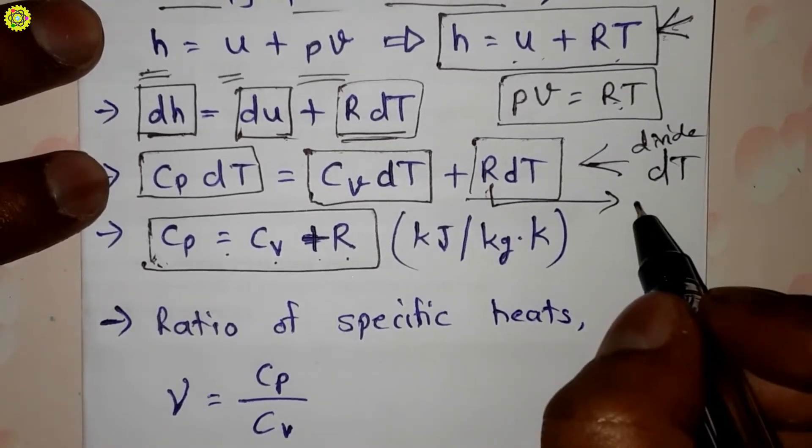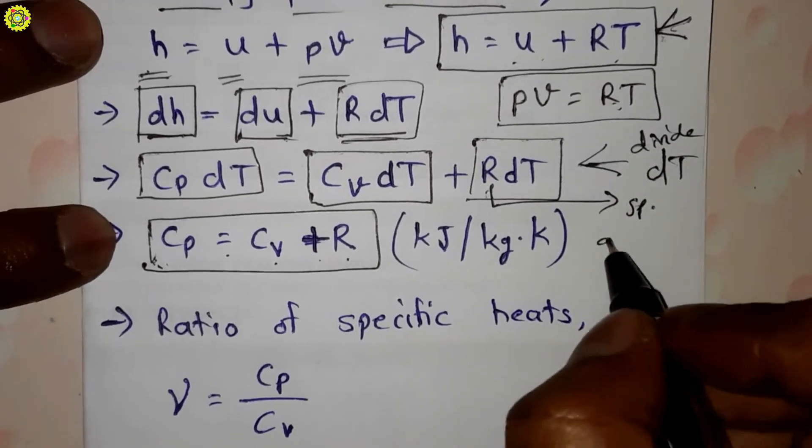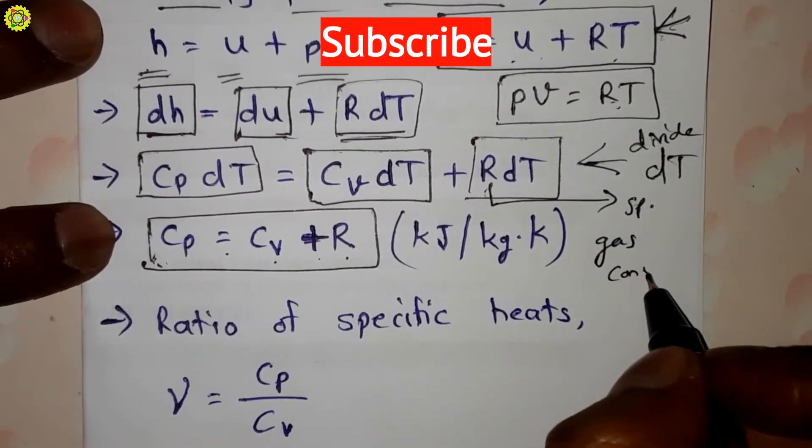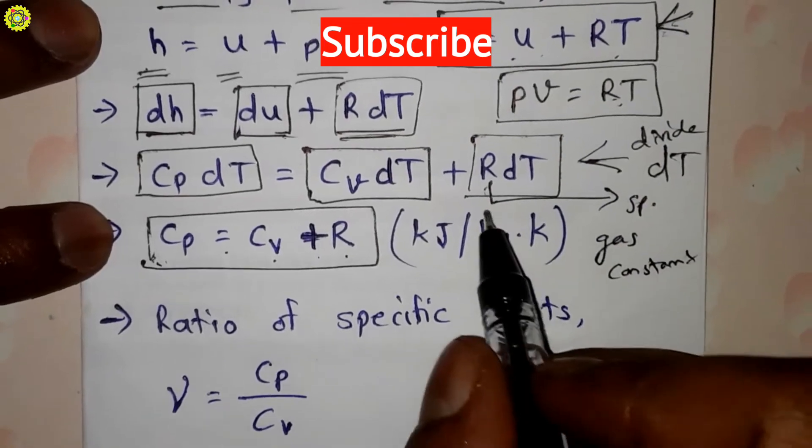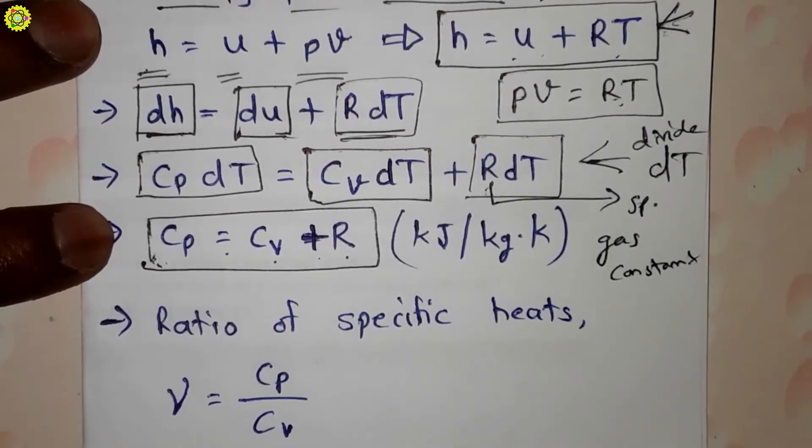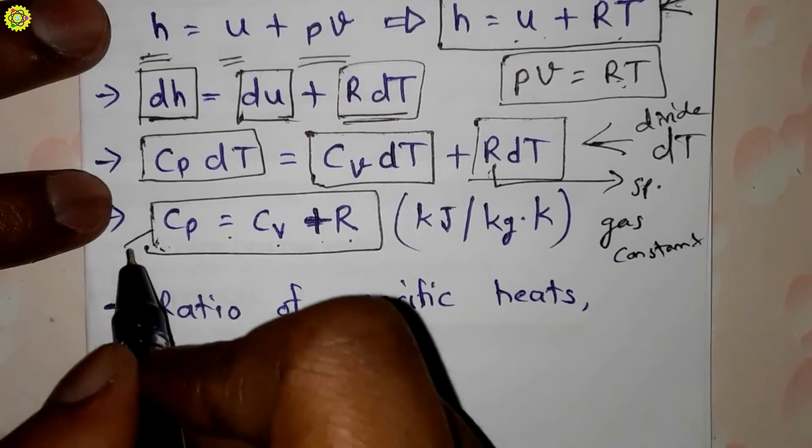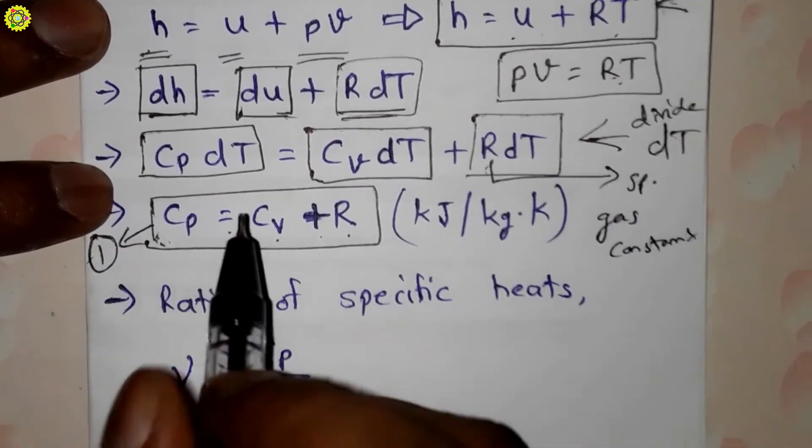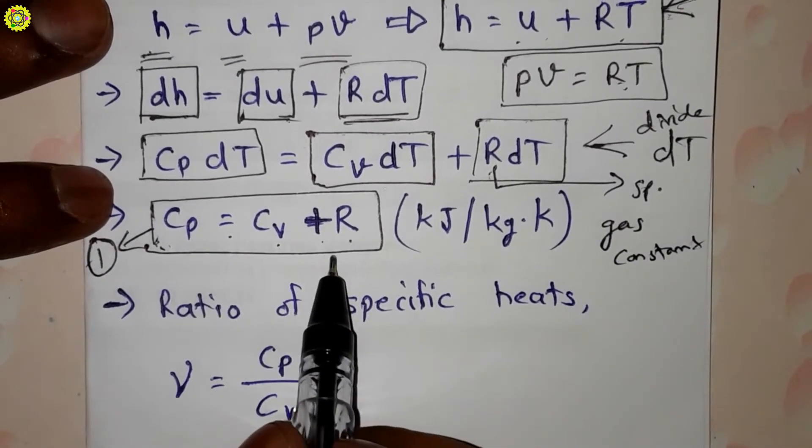R is here our specific gas constant or characteristic gas constant. This is our first relation: Cp equals Cv plus R, and its unit is kilojoule per kg kelvin.